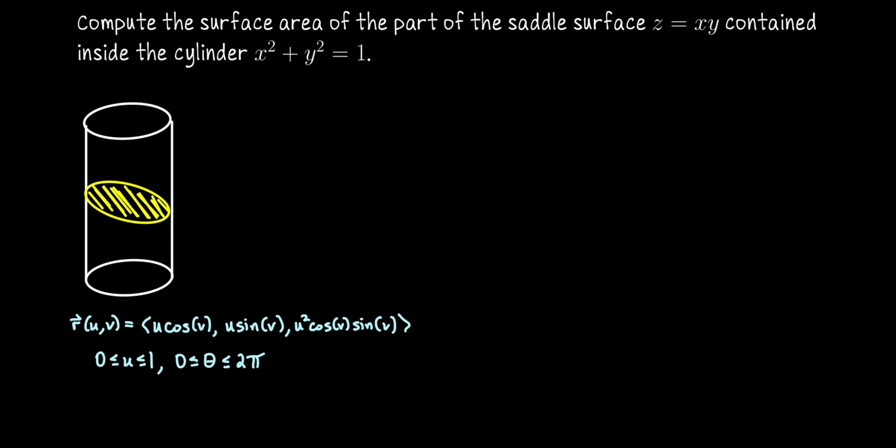To proceed with the surface area computation, we now need to differentiate this parametrization with respect to u and with respect to v. So we can say r subscript u is going to be cosine v, sine v, 2u cosine v sine v.